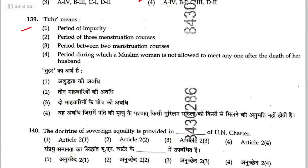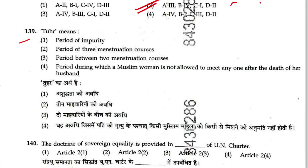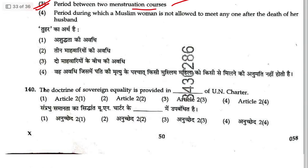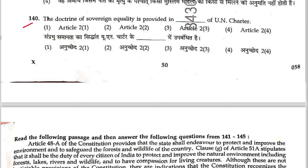Question 139: The term 'iddat' means the period of purity — the period between two menstruation cycles. Answer is 3.